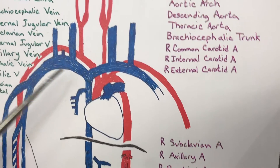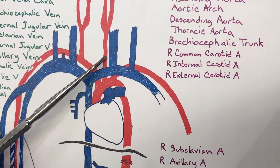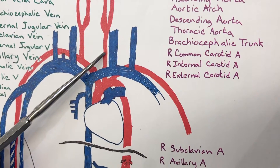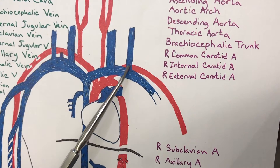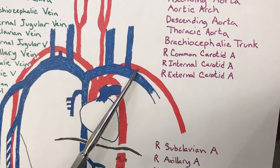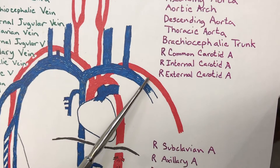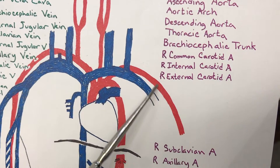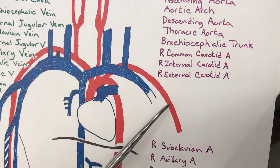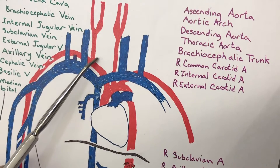This here is your brachiocephalic artery. This is your left common carotid artery, and this is your left subclavian artery. After it passes rib one, this becomes the left axillary artery, and then brachial artery after the armpit.